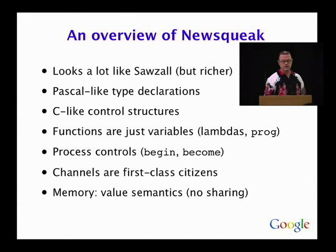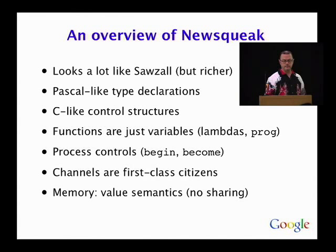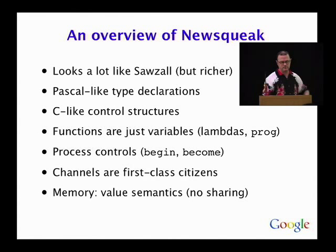Perhaps the single most radical thing in NewSqueak is this notion that every memory cell has value semantics — that is, everything is a value. There are no references anywhere in the language. Sawzall has the same property. People start using Sawzall and still sort of don't believe that could be true, but it is. It has implications for how you think about concurrency and shared memory, which are important, but I'm going to gloss over it because it's not central to the model I want to talk about.